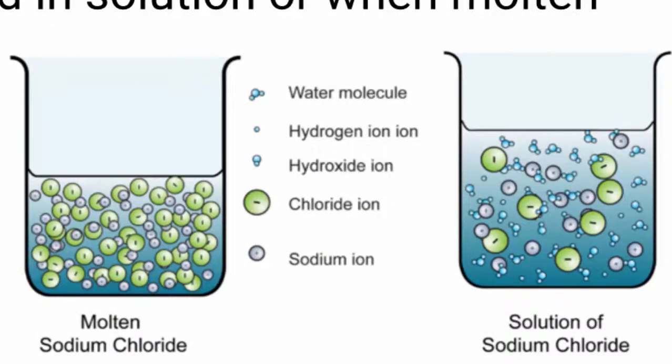We have a couple of diagrams here, molten sodium chloride and then a solution of sodium chloride. And the one thing that you should be able to tell between these two things and what is common about them is that when sodium chloride is melted or when it's in solution, the ions are separated from one another. That's the key.